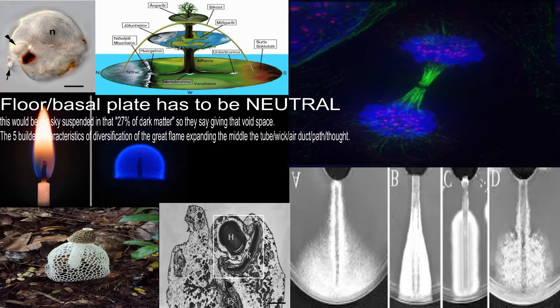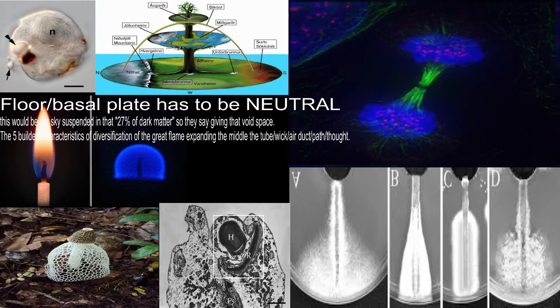Different neurons in the basal plate are influenced by the sonic hedgehog protein — energy. Remember how fast Sonic was? Energy, speed of light. They talk to us in code, so that's why I'm doing this. Different neurons in the basal plate are influenced by the sonic hedgehog protein released by ventralizing structures such as the notochord and floor plate — ventralizing meaning breathing.